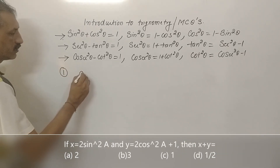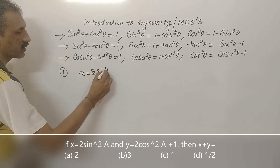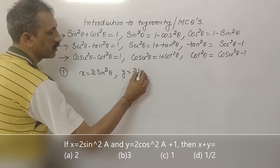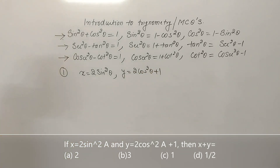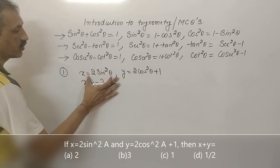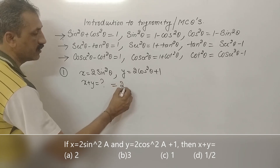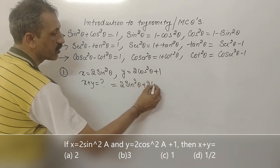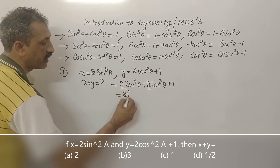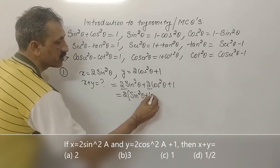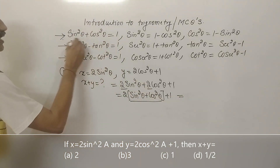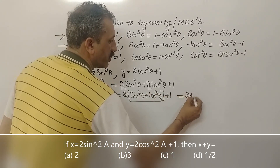If 2 sin square theta plus 1 equals x and y equals 2 cos square theta plus 1, what is the value of x plus y? Adding both sides: x plus y equals 2 sin square theta plus 2 cos square theta plus 1. Since sin square theta plus cos square theta equals 1, x plus y equals 2 times 1 plus 1, which gives us 3.